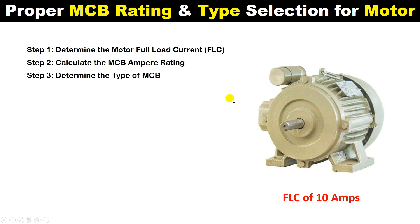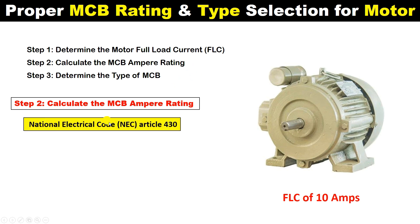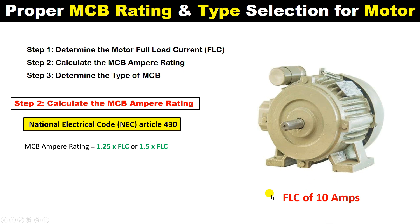Friends, for this motor, if you use an MCB, then how much rating MCB must be used — for this there is a rule. In Article 430 of the NEC it is stated that the rating of the MCB must be the FLC multiplied by 1.25, or if you want to add more protection then you can use 1.5 also. So the MCB rating must be 1.25 times the FLC.